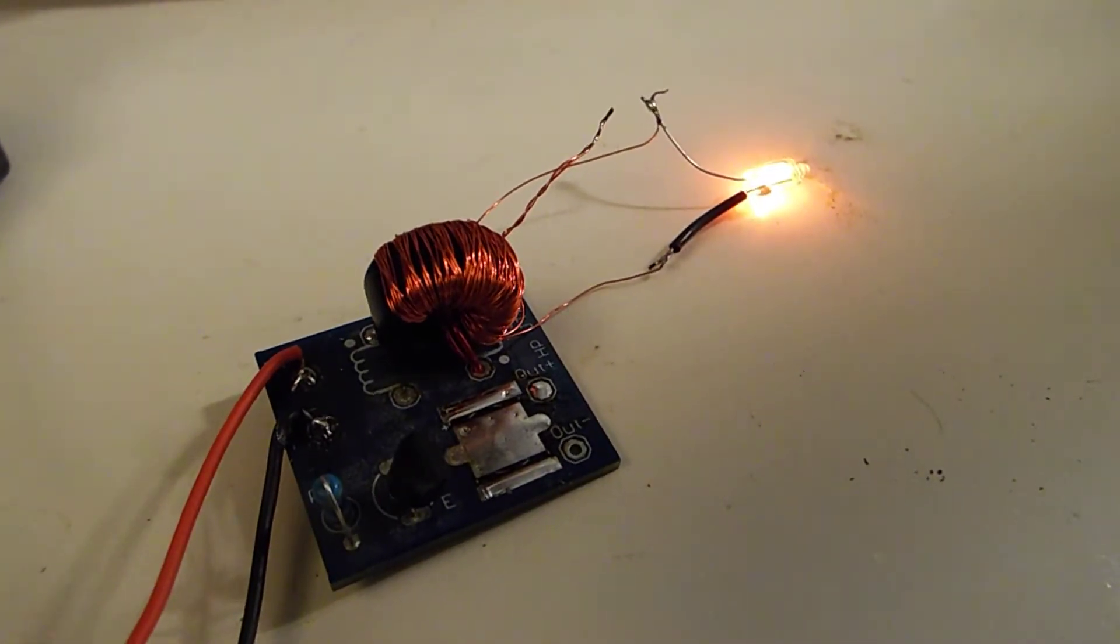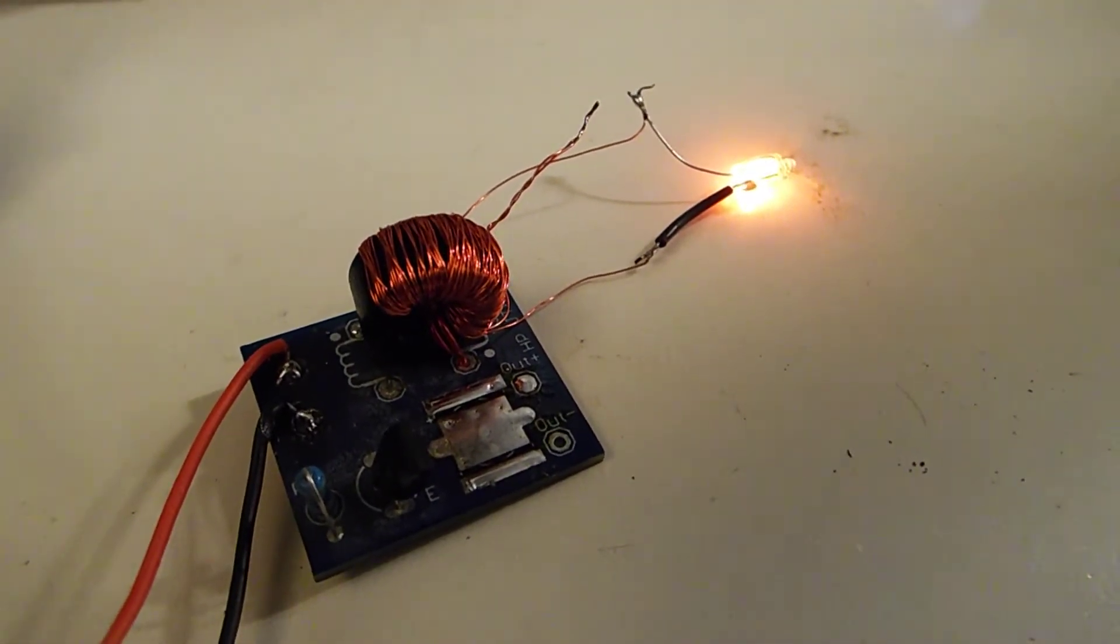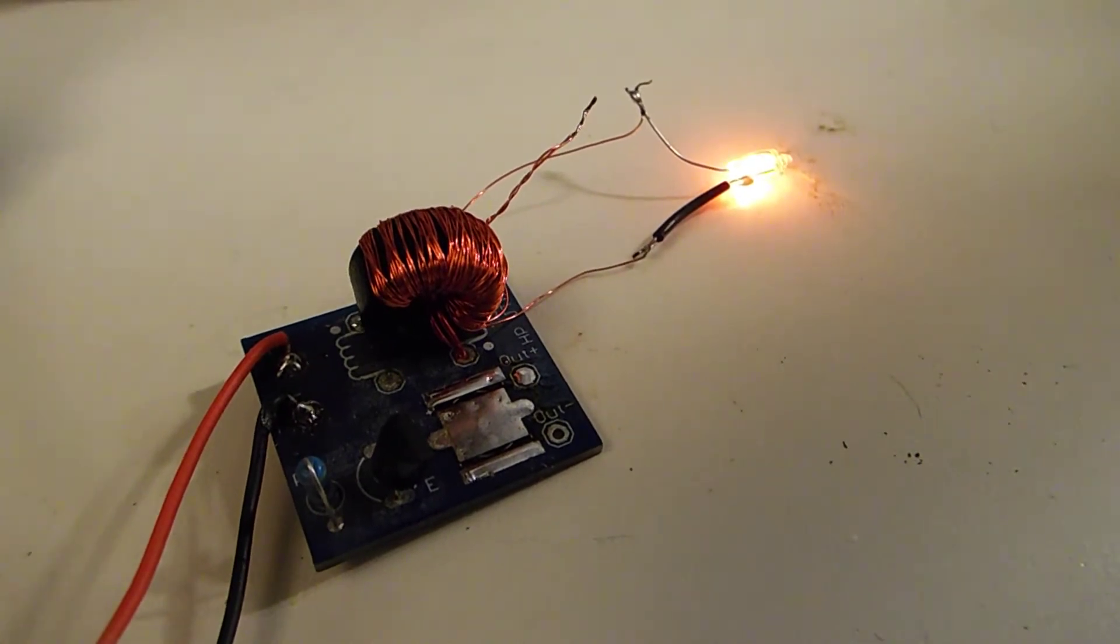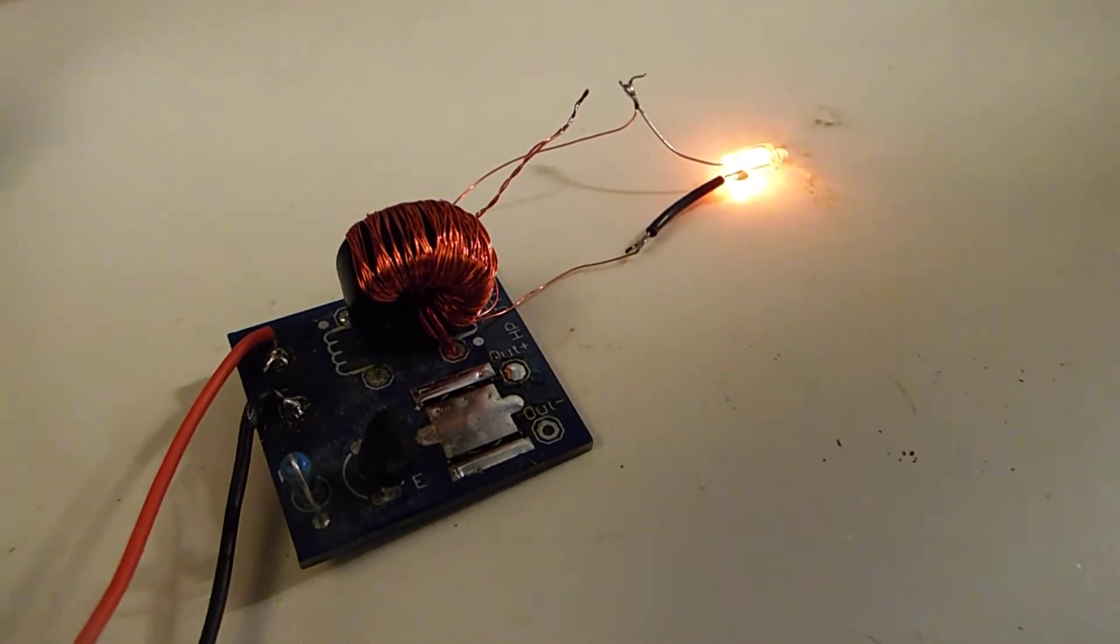So this is a high voltage output Joule Thief circuit. I was asked if I could make one that would light a 125 volt neon bulb.